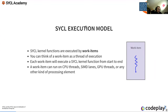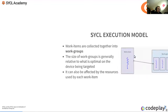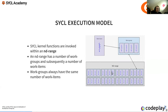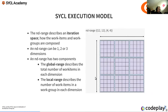The fundamental unit is work items, which are organized into work groups, and work groups are organized into ND ranges. ND ranges are defined by the global range, not by the number of work groups — that's quite important. For example, a 16 by 2 ND range with a local range of four by one.